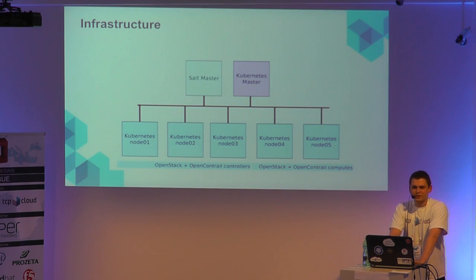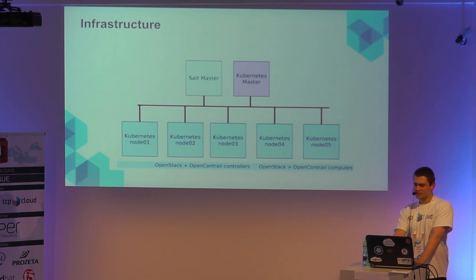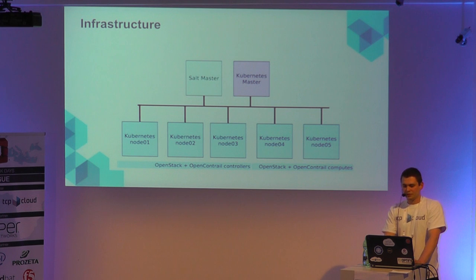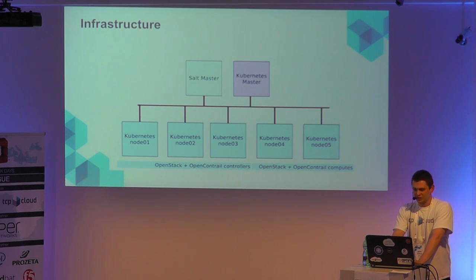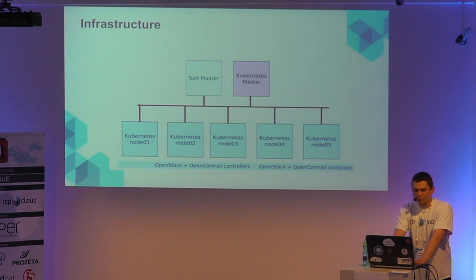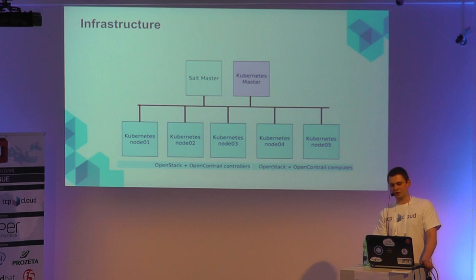This is the infrastructure we used for the demo. We have one Saltmaster which delivers configuration management for the Kubernetes cluster as well as the manifests for deploying OpenStack. Then we have the Kubernetes master, currently running as a single node for the demo. For production, there's no problem to deploy a clustered Kubernetes. It's just about clustering the etcd key-value store. Then we have three Kubernetes physical nodes for OpenStack and OpenContrail controllers, and two Kubernetes nodes for OpenStack and OpenContrail compute.